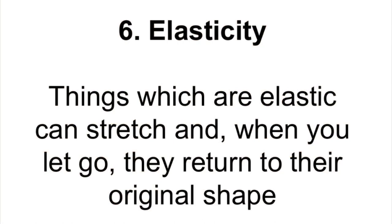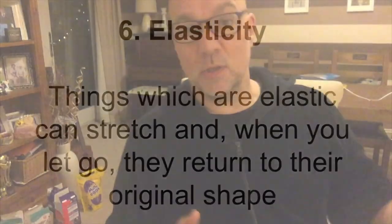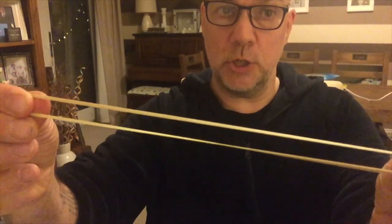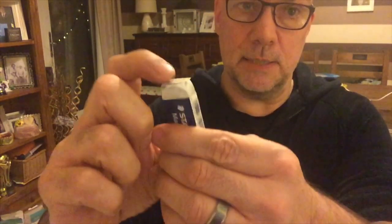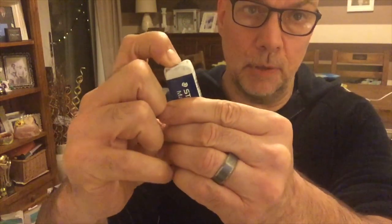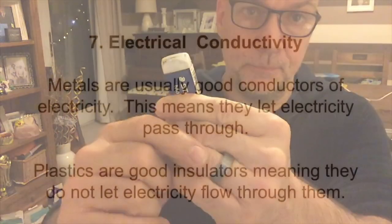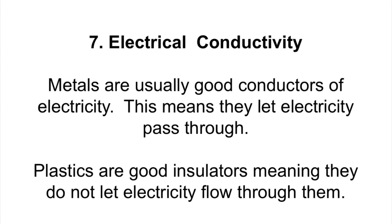Property number six is elasticity — things that stretch and return to their original shape, like elastic bands and springs. The main thing about elastic materials is that when you stretch them they return to their original shape. An elastic band: you stretch it, let go, and it returns to its original shape. Blue tack is not elastic at all — when you stretch it, it stays stretched. Rubber is quite elastic because you can squash it, let go, and it returns to its original shape.